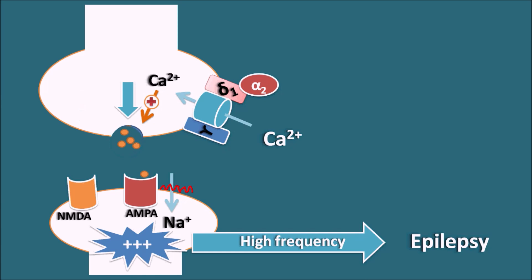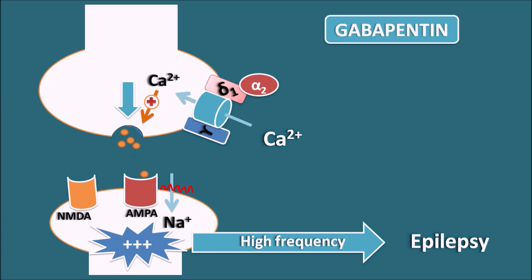When the alpha-1 subunits are activated, calcium enters the presynaptic membrane, enhancing exocytosis and releasing neurotransmitters like glutamate. In epilepsy, more calcium enters the presynaptic membrane, resulting in excessive release of glutamate. Here Gabapentin plays a key role: Gabapentin blocks the alpha-2 delta-1 subunit, thereby inhibiting calcium entry into the presynaptic membrane and blocking the release of neurotransmitters like glutamate. This is the possible mechanism by which Gabapentin produces anti-epileptic as well as analgesic actions.